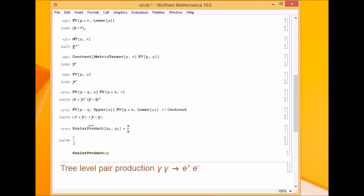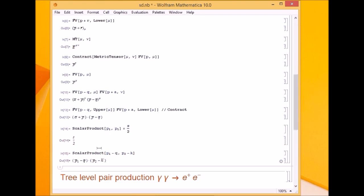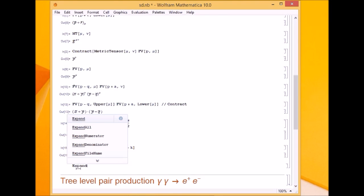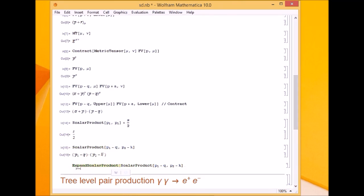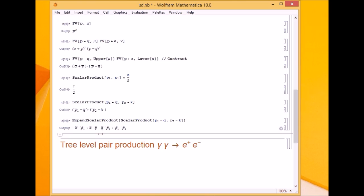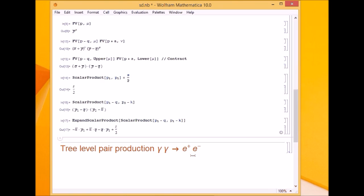If I have a scalar product of (p1-q).(p2-k), now if I want to expand the scalar product, the command is ExpandScalarProduct. Then I give the argument and it expanded. Now s/2, this is the desired result. Since it didn't find anywhere p1 square, it couldn't substitute s/2. If I had instead of p2, if I had p1, where it found p1 square it substituted this result s/2.